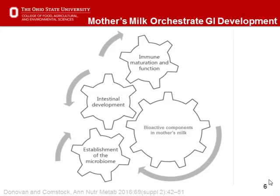Some factors we're now supplementing into weaning diets include prebiotics or oligosaccharides — the complex carbohydrates found in mother's milk secreted by the mammary gland. These help establish the microbiome by bypassing digestion in the small intestine and fermenting in the large intestine. There is also some absorption of these oligosaccharides, and they function to develop a mucosal immune system and support carbohydrate development in the GI tract.